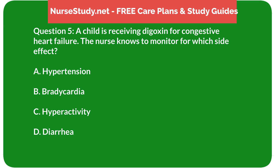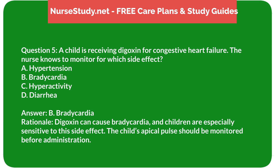Question 5: A child is receiving digoxin for congestive heart failure. The nurse knows to monitor for which side effect? A) hypertension, B) bradycardia, C) hyperactivity, D) diarrhea. Answer: B) bradycardia. Rationale: Digoxin can cause bradycardia, and children are especially sensitive to this side effect. The child's apical pulse should be monitored before administration.